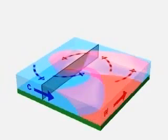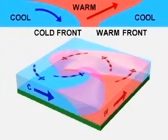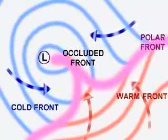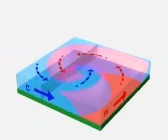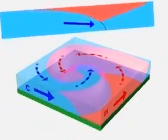The denser, faster moving cold air begins to overtake the warm front. Warm air at the center of the in-spiral is lifted off the ground.